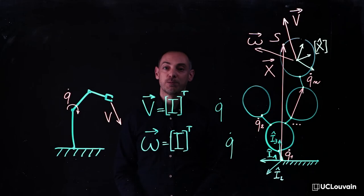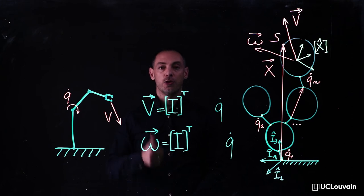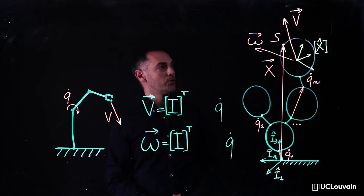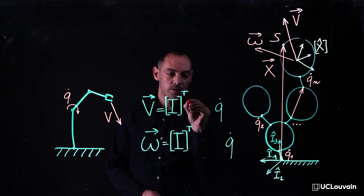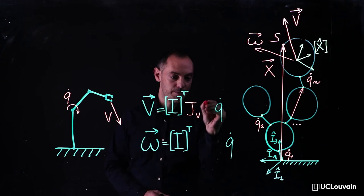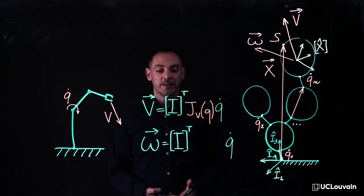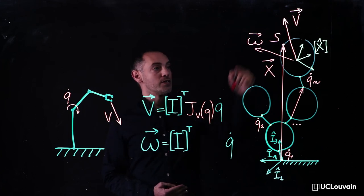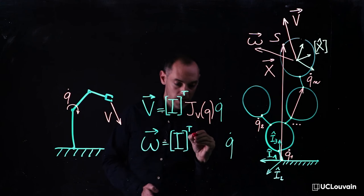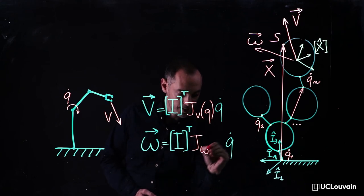Last but not least, the direct kinematics can provide two essential quantities, the Jacobian matrices, the one related to the absolute velocity v, and denoted jv, and the other one related to the absolute angular velocity omega, and denoted j omega.